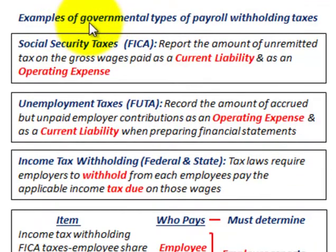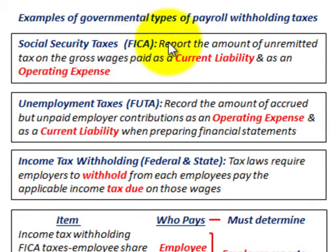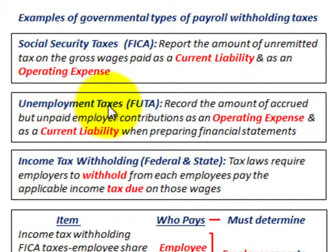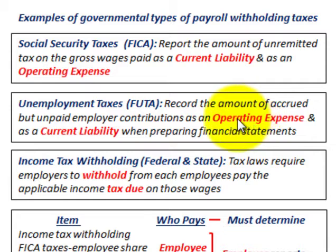We're going to look at some examples of governmental payroll withholding taxes. First is Social Security taxes, or the FICA tax — you'd report the amount of unremitted tax on gross wages paid as a current liability and as an operating expense. For unemployment taxes, or FUTA, you'd record accrued but unpaid employer contributions as an operating expense and current liability when preparing your financial statements.